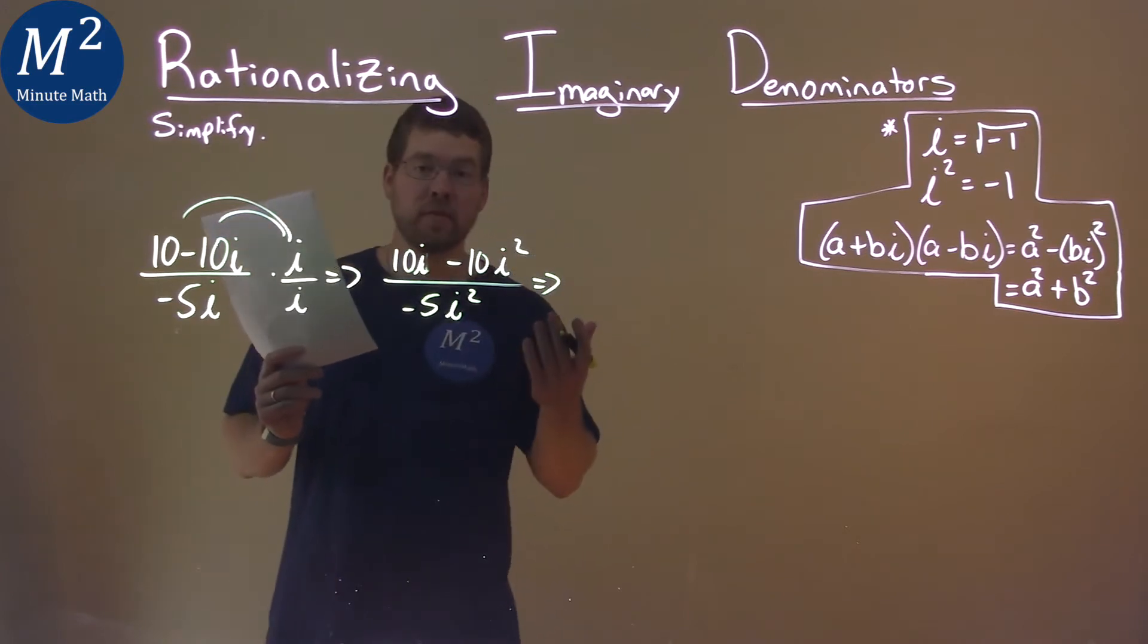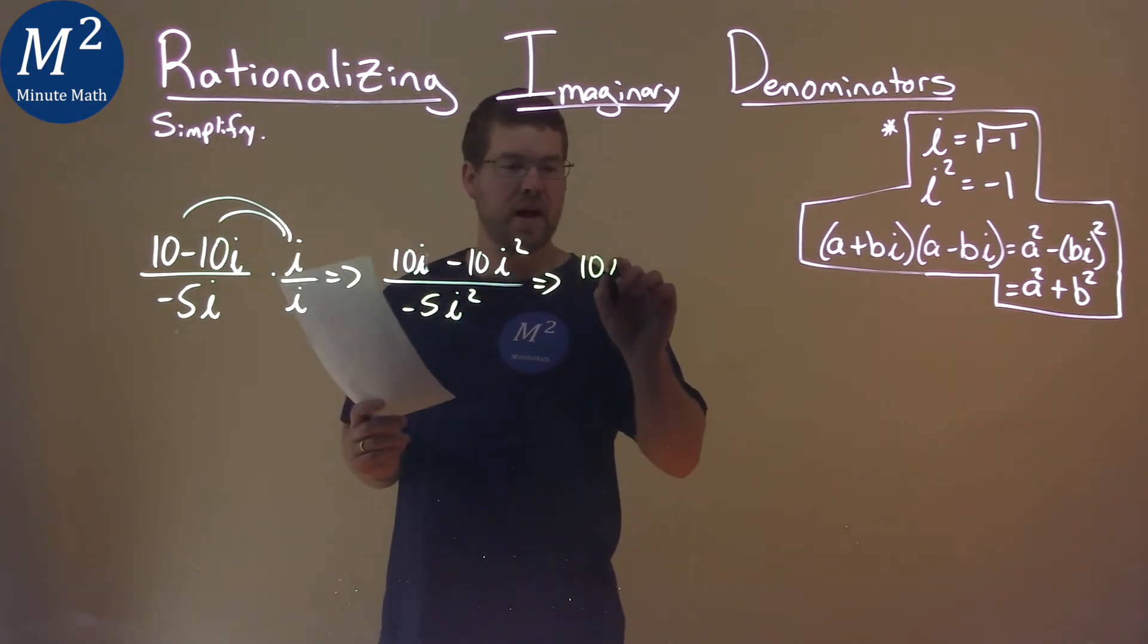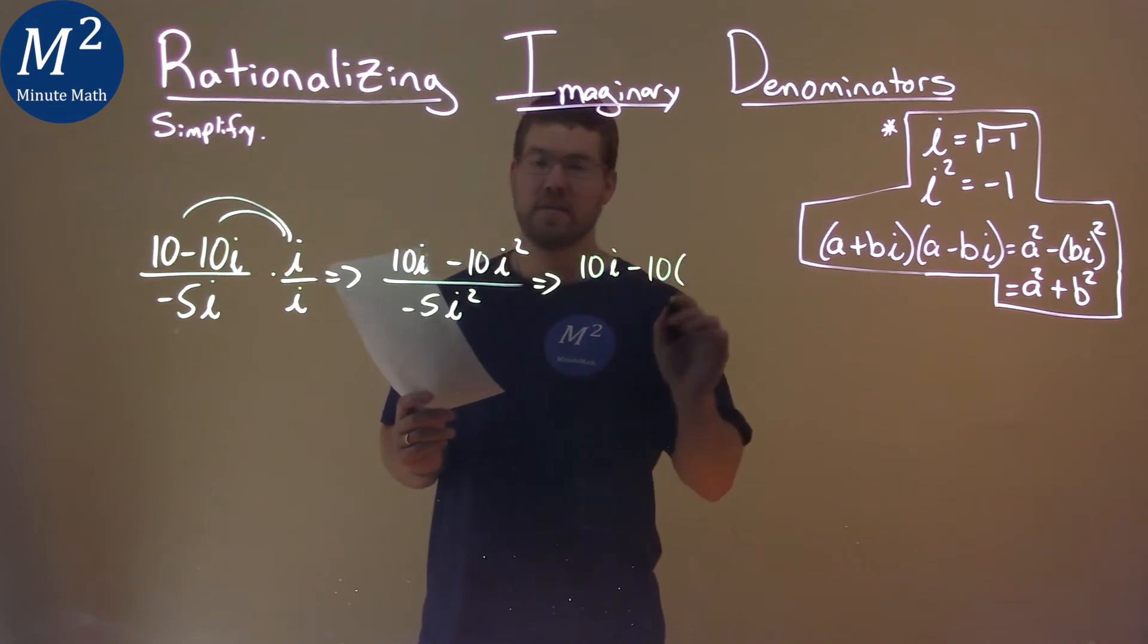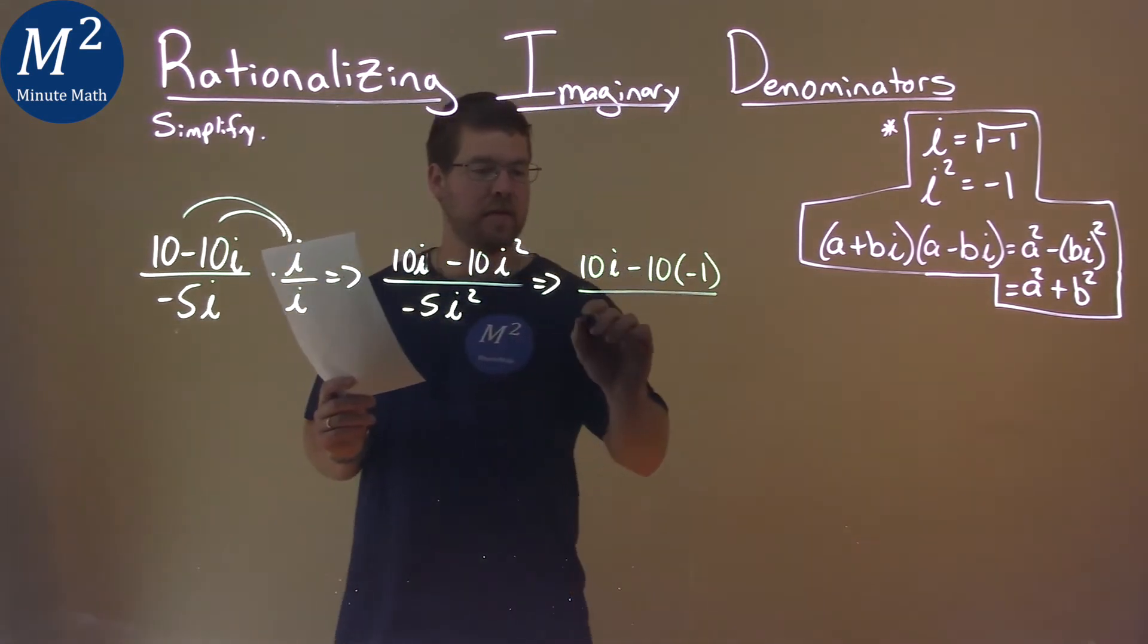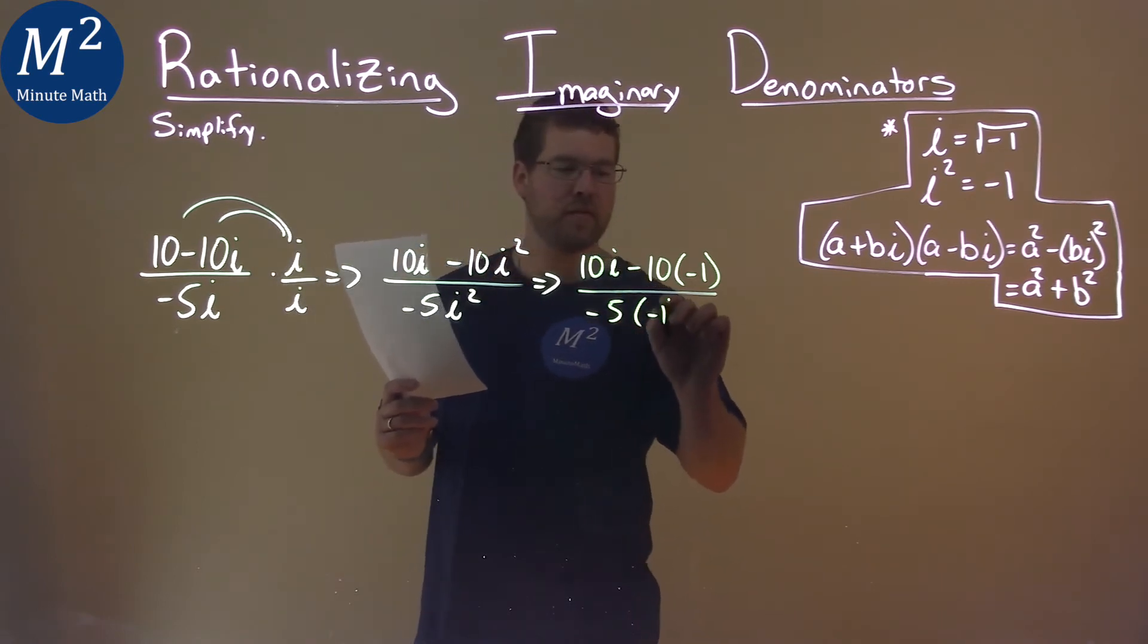So every time I see an i squared, let's replace it with negative 1. We have 10i minus 10, instead of i squared, negative 1. Denominator, negative 5 times, instead of i squared, negative 1.